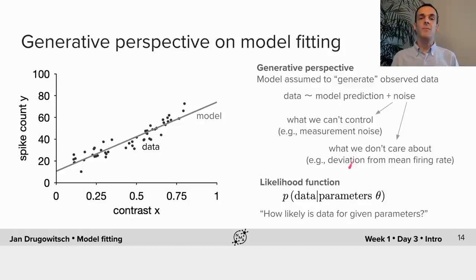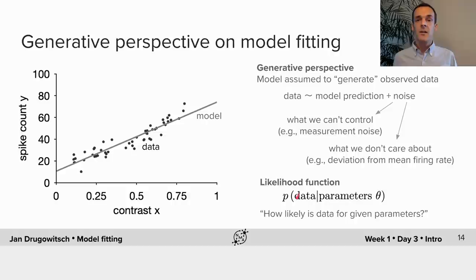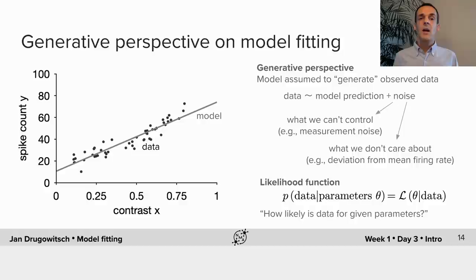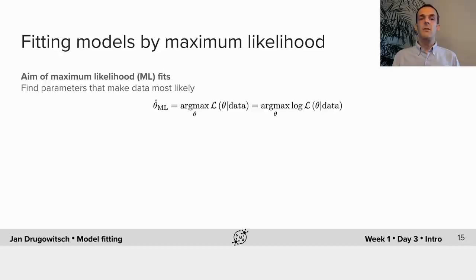The likelihood function is a probability distribution of our data given our parameters and allows us to ask questions like how likely is the data for a given set of parameters. Importantly, this is a probability distribution over the data but not over parameters, because it does not sum to one across all possible parameter values. As we're interested in the likelihood function as a function of these parameters, we write it as a function L of our parameters given the data. The principle of maximum likelihood then tells us that the best parameters are the ones that make the data most likely — the parameters that maximize our likelihood.